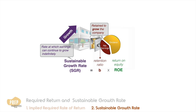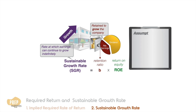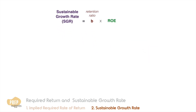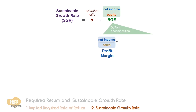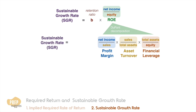This fulfills the definition of growth rate under the Gordon Growth Model. The implicit assumption is that the firm's debt-to-equity ratio remains unchanged and that the firm does not issue new equity. If you recall from Level 1, the ROE of a company — net income over equity — can be decomposed into three components based on the DuPont system: the profit margin, asset turnover, and financial leverage.